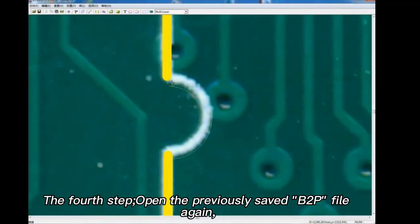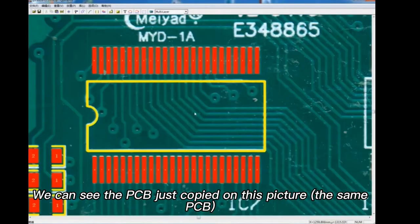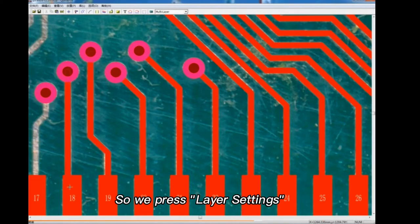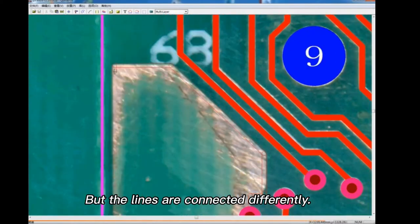The fourth step: open the previously saved BRP file again. We can see the PCB just copied on this picture, the same PCB. The holes are in the same position, but the lines are connected differently.